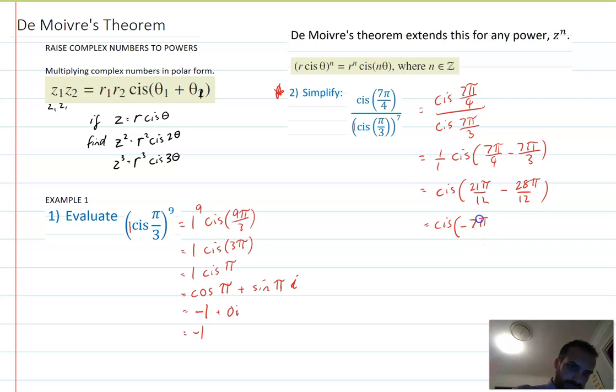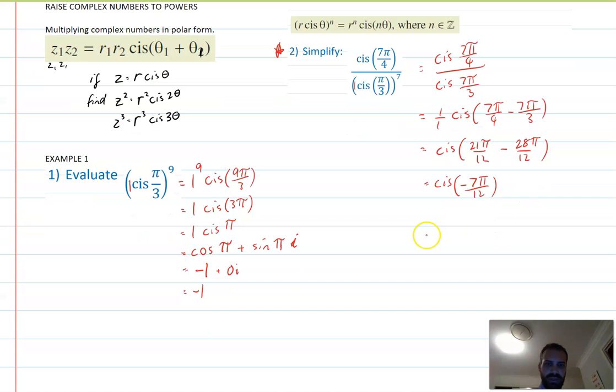Now we have cis 21π minus 28π is 7π, or negative 7π over 12. We can't bust that up further. We can't jump in here and start mucking around because 7π/12 isn't one of those nice, neat little fractions of π that we've got some values for. So we're sort of finished there.